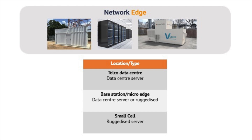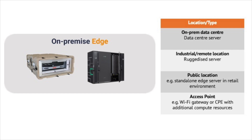On-premise edge is where the edge location is either at the enterprise site or on-premise. This could be something like a manufacturing site, a port, or even a shopping center — wherever the edge compute is needed. Some edge deployments will be in standard or on-prem data centers on these enterprise sites, but in some areas there might be a single edge device running the workload.